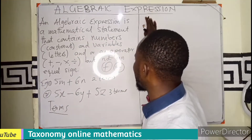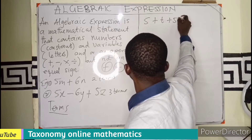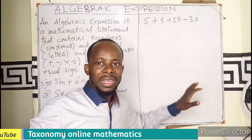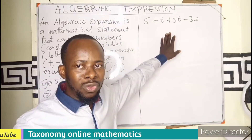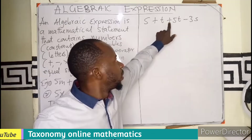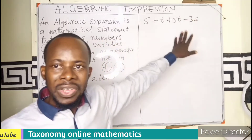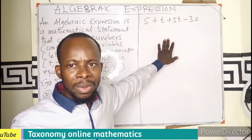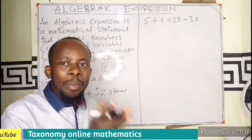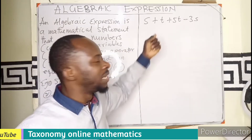So if I give you an expression that is 5X plus T plus 5T minus 3S and I ask you how many terms are in this expression, you can count by looking at the operators. Each operator separates terms. So we are having 1, 2, 3, 4 — four terms in this expression.